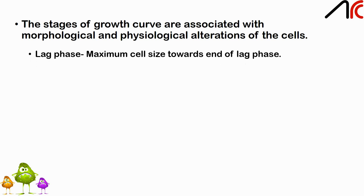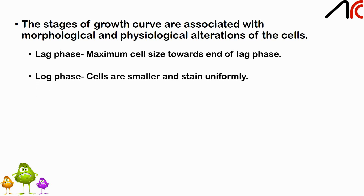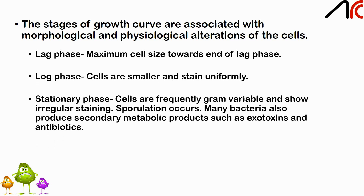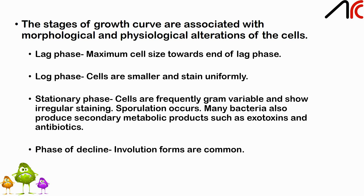In the lag phase, maximum cell size is obtained towards the end of the phase. In the log phase, cells are smaller and stain uniformly. In the stationary phase, cells are frequently gram-variable and show irregular staining; sporulation occurs, and many bacteria produce secondary metabolic products such as exotoxins and antibiotics. In the phase of decline, involution forms are more common.